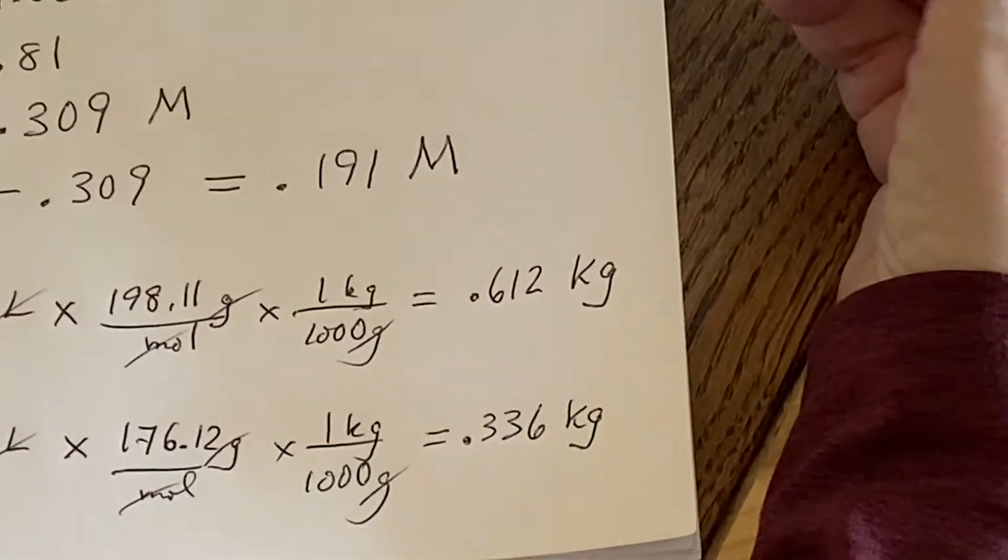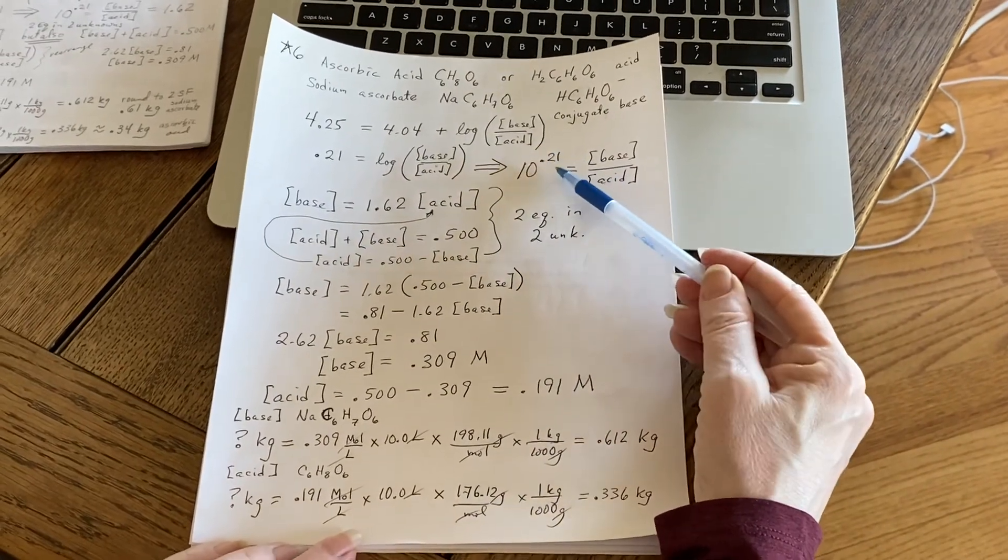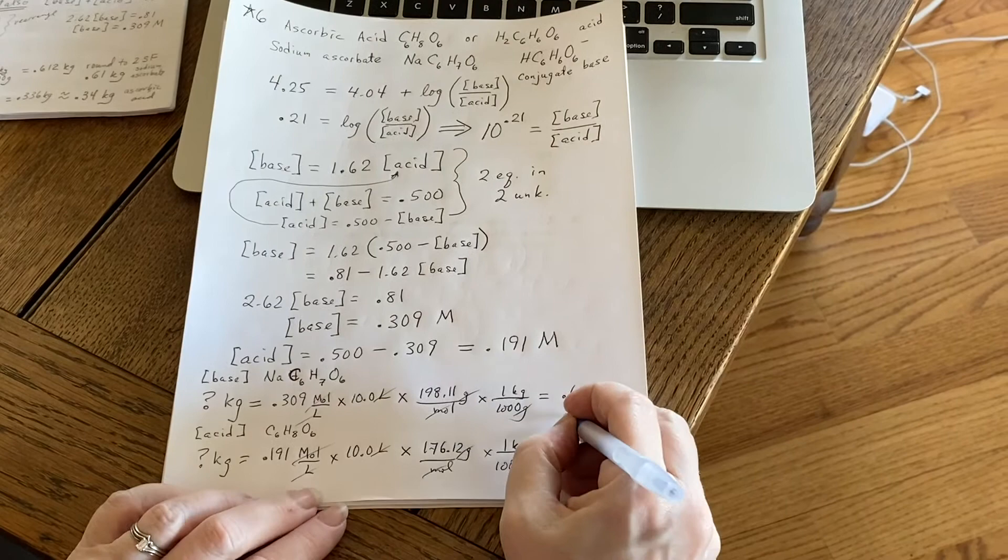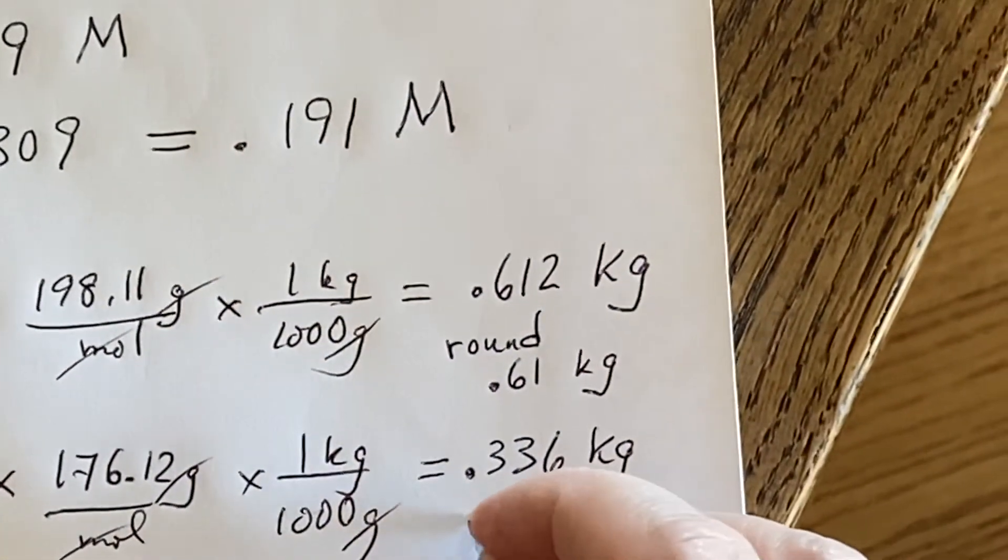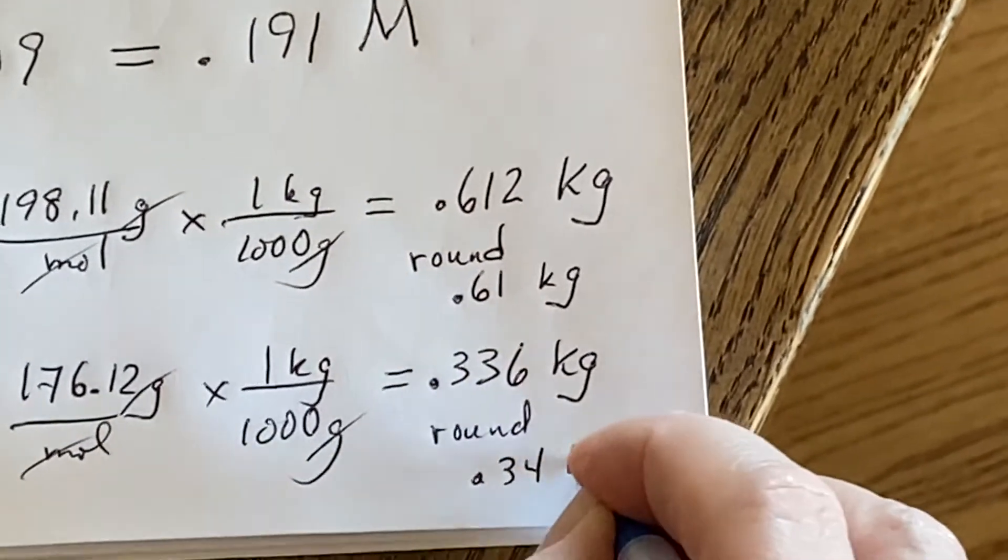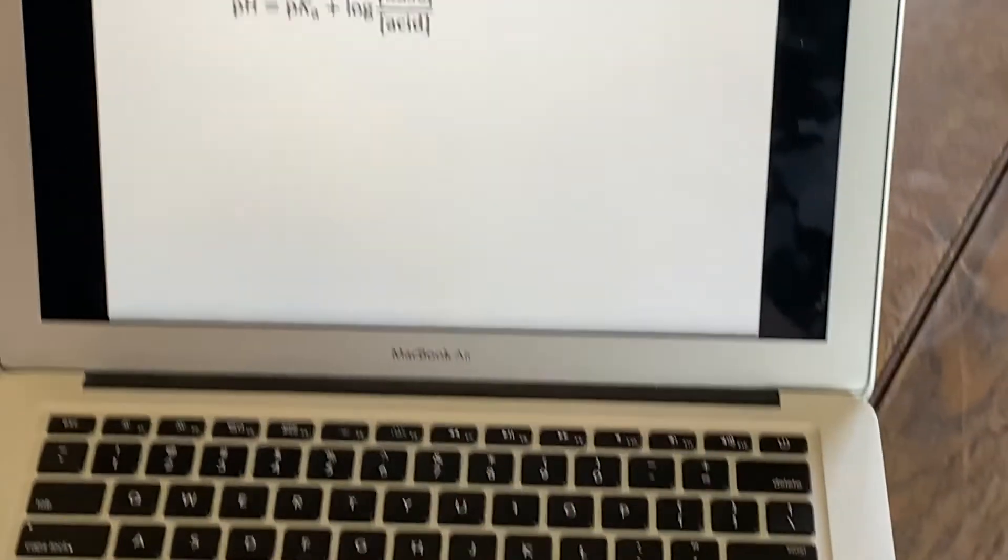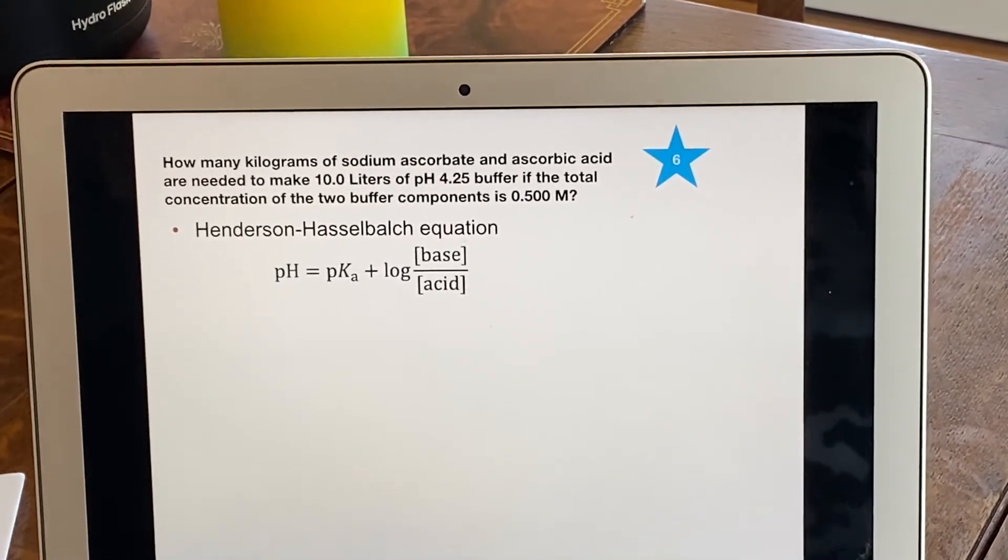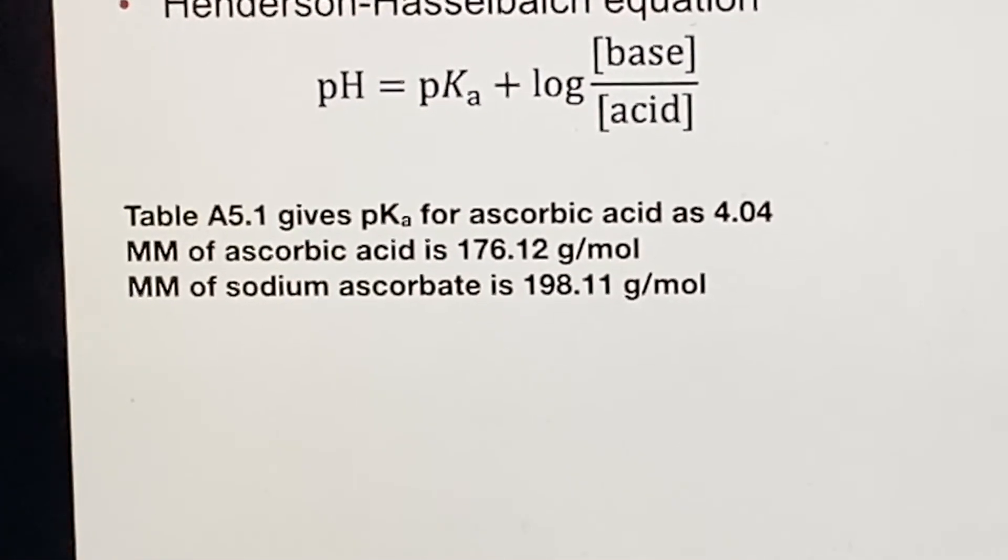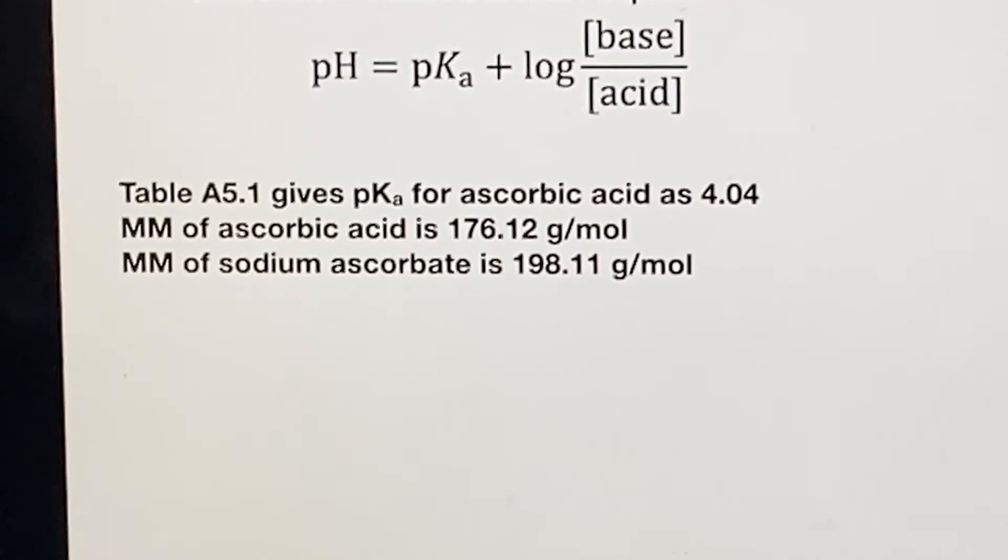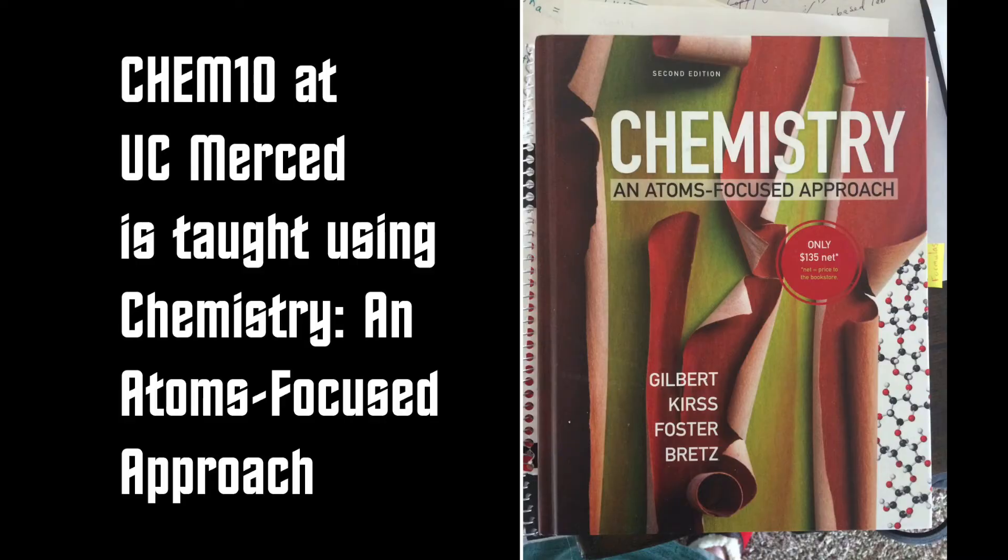Now you might look back at this and say, do I really have three sig figs? Even though you did here, I'm thinking here, you don't. So you might end up rounding this. You might end up rounding it back to 0.61 kilograms. And this one rounding up to 0.34 kilograms would probably be the better answer in this case. So up here, we have the Henderson-Hasselbalch equation. That's what we started with up here. And then we looked up the pKa because they didn't tell us in the problem. So I had to go find it in a table. And I also looked up the molar masses that I used at the bottom of the problem.